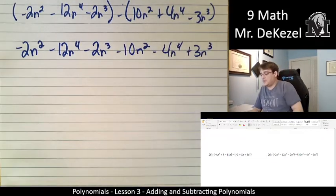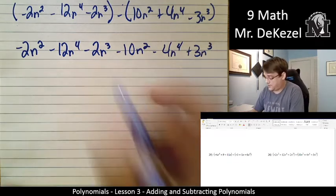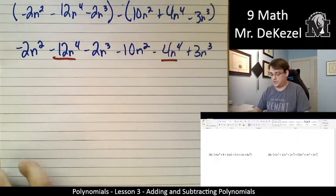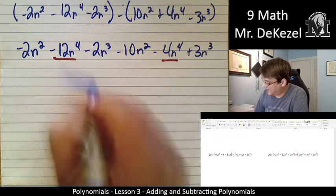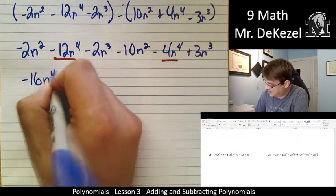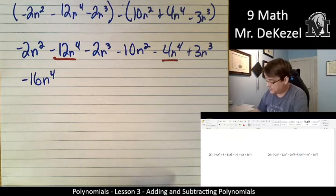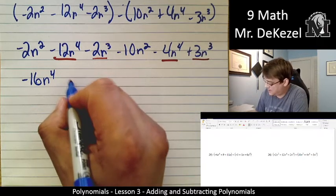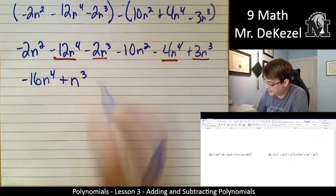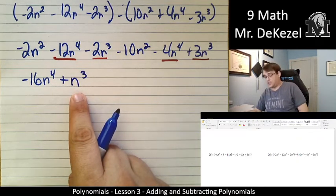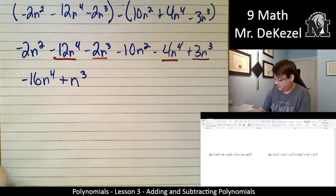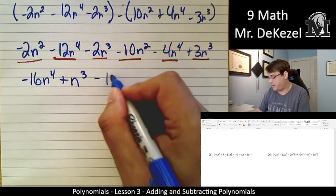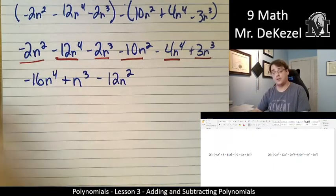Let's add all our highest powers together first. We have minus 12 minus 4. That's minus 16n to the power of 4. Let's do the next ones. That's minus 2 plus 3. So plus n to the power of 3. And then minus 10n squared minus 2n squared. That's minus 12n squared. We have our answer.